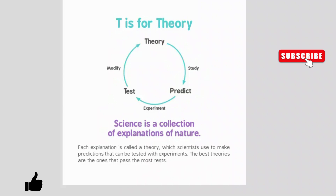T is for theory. Science is a collection of explanations of nature. Each explanation is called a theory, which scientists use to make predictions that can be tested with experiments. The best theories are the ones that pass the most tests.